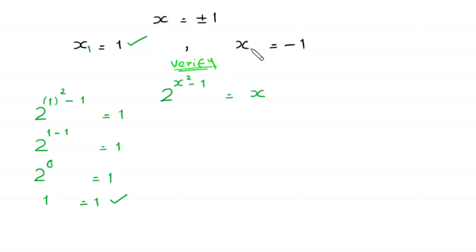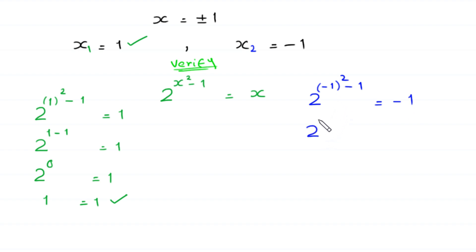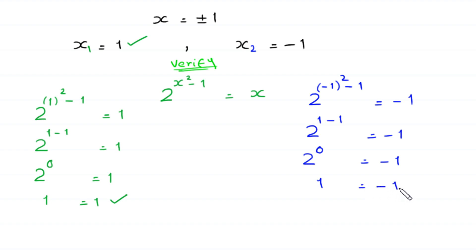Now putting x equals negative 1: 2 to the power of negative 1 squared minus 1 equals negative 1. Negative 1 squared is 1, so 2 to the power 0 equals negative 1, which gives 1 equals negative 1. Since 1 is not equal to negative 1, x equals negative 1 is not a solution. Therefore, the only solution is x equals 1.